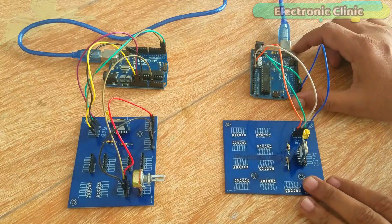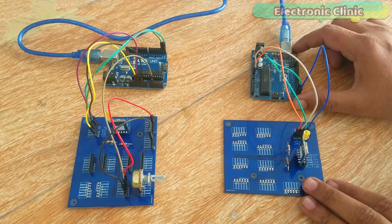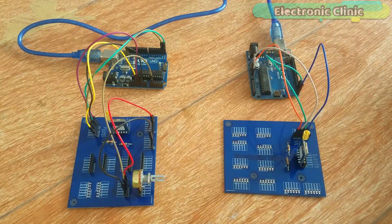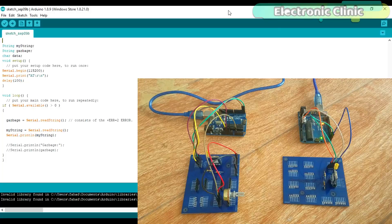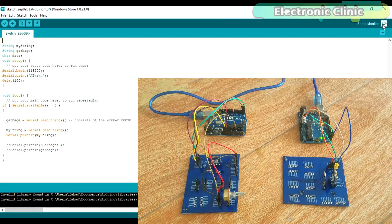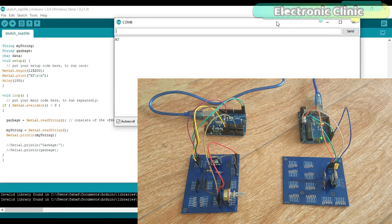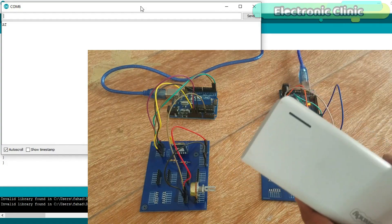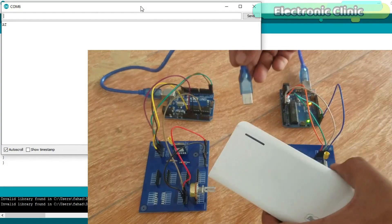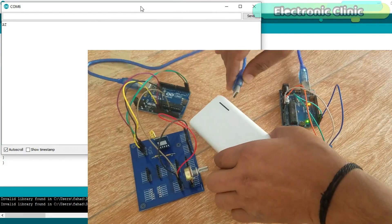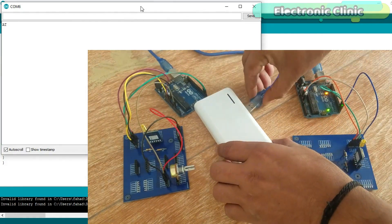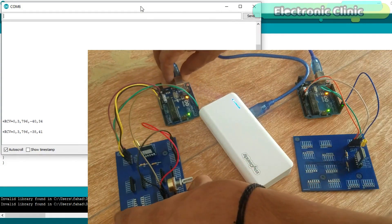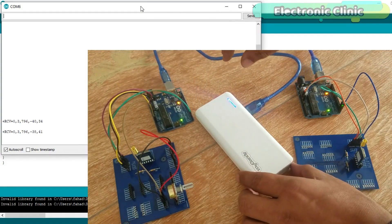This is the receiver side Arduino which I am going to connect with the laptop. Now click on the serial monitor. I am going to power up the transmitter side using a power bank.